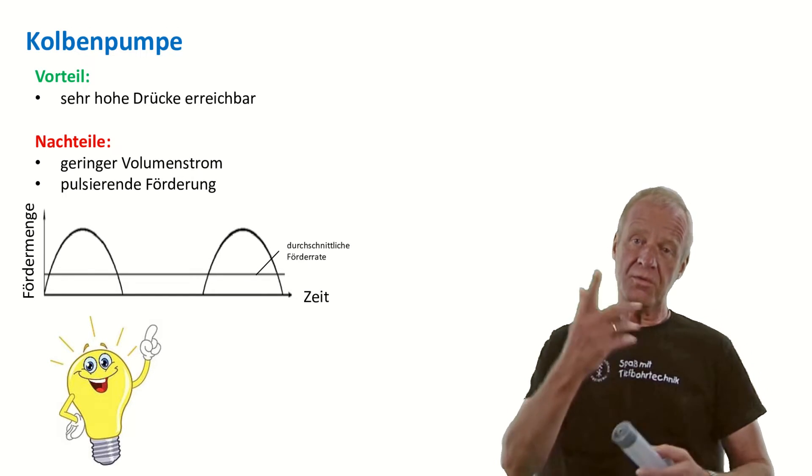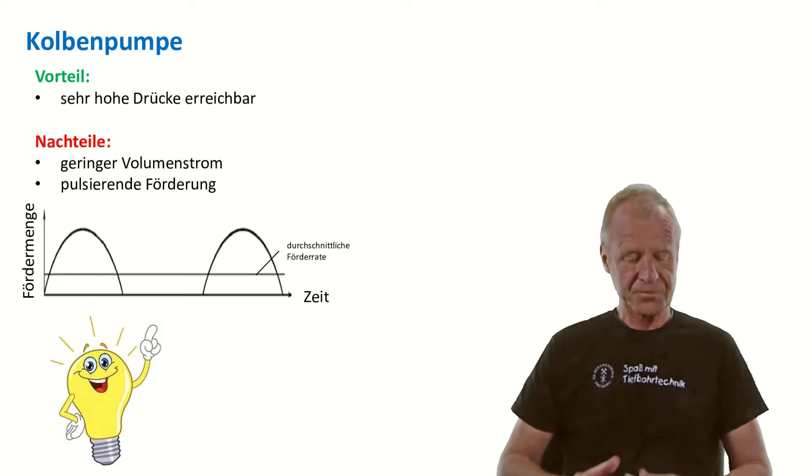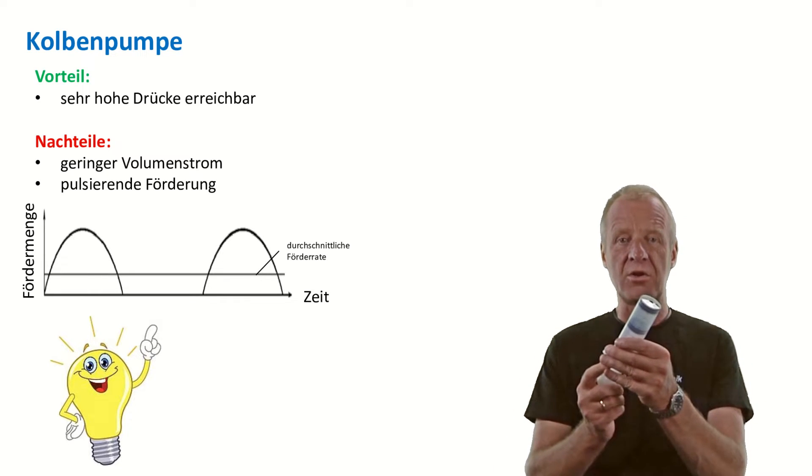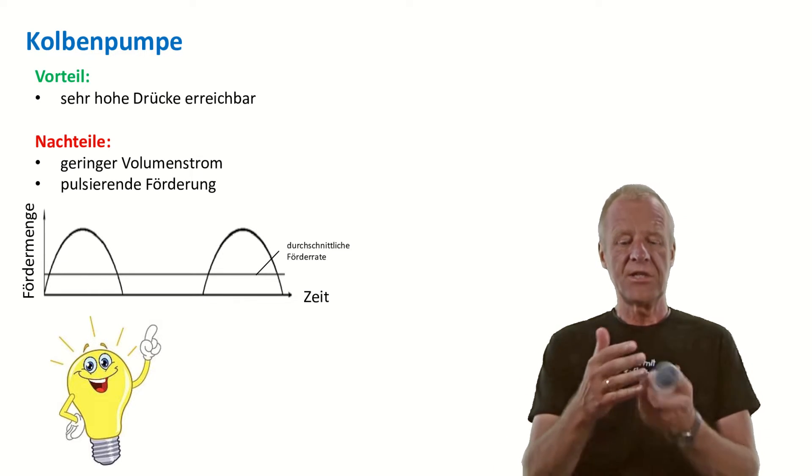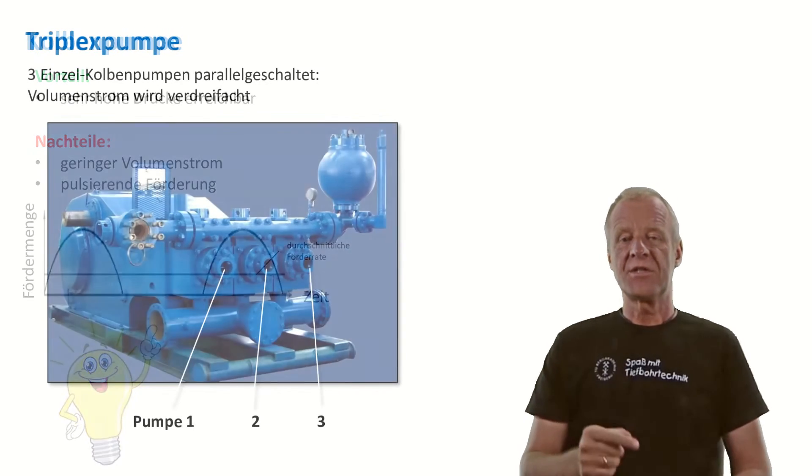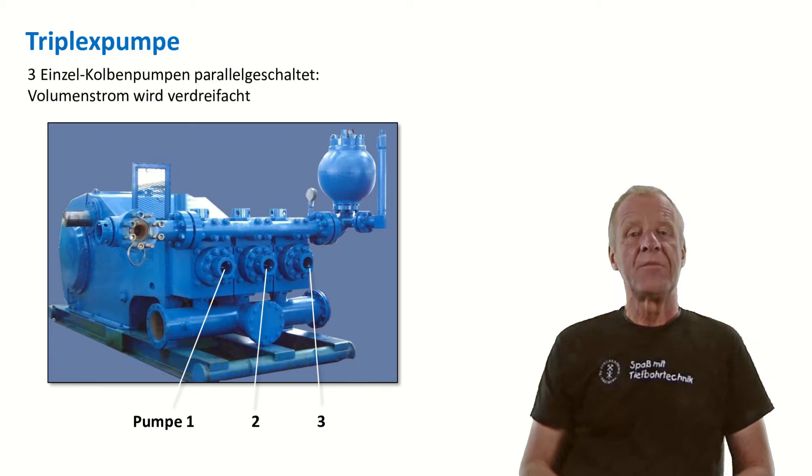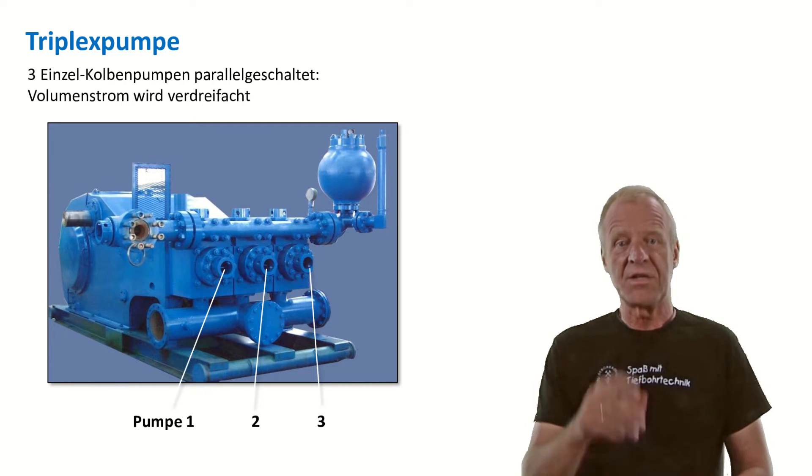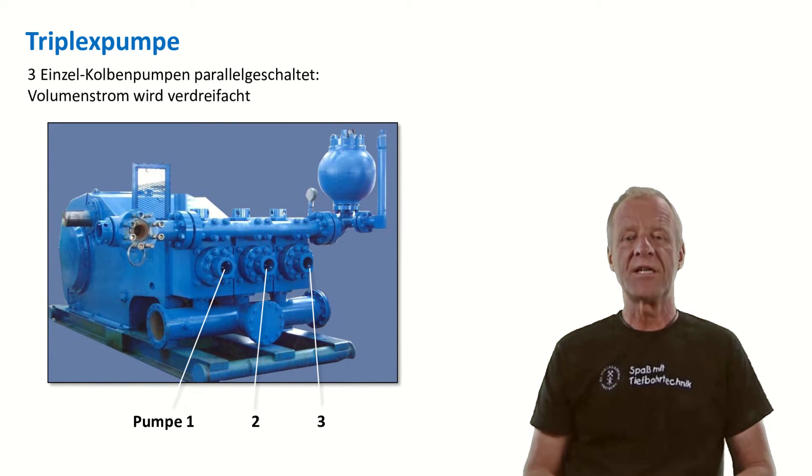First, let's take a look at the flow rate. If the flow rate of one piston pump is not enough, then we put several piston pumps next to each other, maybe three. That is what we can see here behind me in a so-called triplex pump. Three pumps are arranged next to each other, thus the total flow rate for a single pump is tripled.